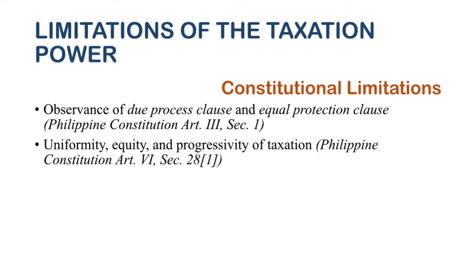Number two, uniformity, equity, and progressivity of taxation. Uniformity means a tax law should be applied not just to one area, aspect, or person, but to all persons or areas under it. For example, if Filipino citizens are taxed at 35 percent, then everyone should be taxed at 35 percent — it must not be selective. Another example: the 12 percent VAT is applied to everyone regardless of the price or value of goods purchased.